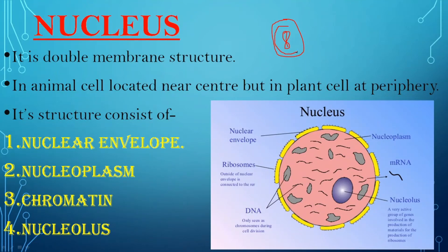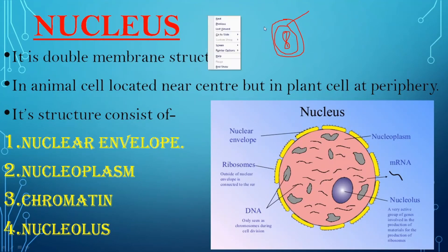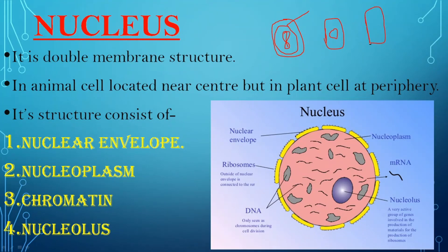But when we talk about eukaryotic cells, there is a membrane structure outside the DNA called the nuclear membrane. Because of that, the eukaryotic nucleus is also called the true nucleus. In plant cells, because they have large vacuoles, most of the area in the cell is occupied by the vacuole, so the nucleus is found a little to the side — at the periphery.